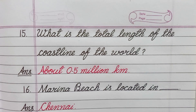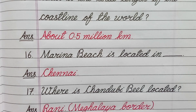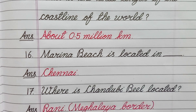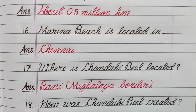Question number fifteen: What is the total length of the coastline of the world? Answer: About 0.5 million kilometers. Question number sixteen: Marina beach is located in which city? Answer: Chennai. Question number seventeen: Where is Sandubi bill located? Answer: Assam-Meghalaya border.